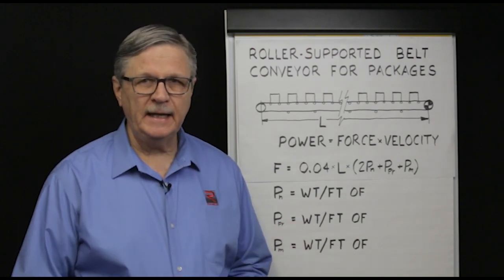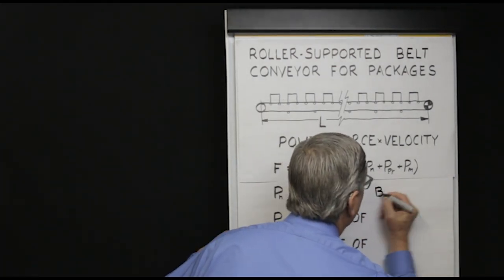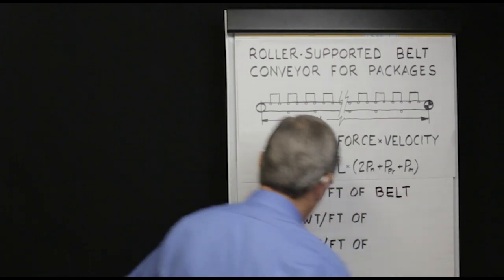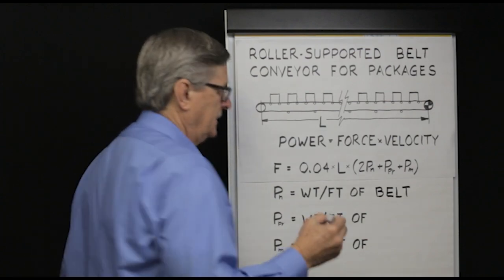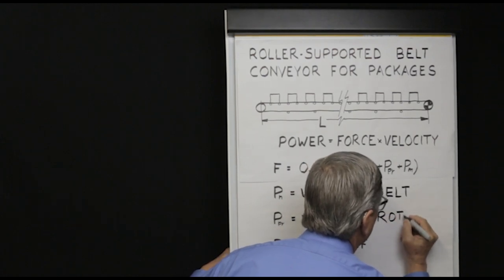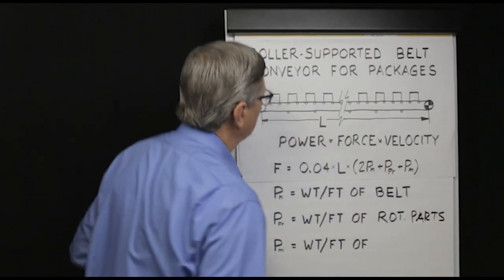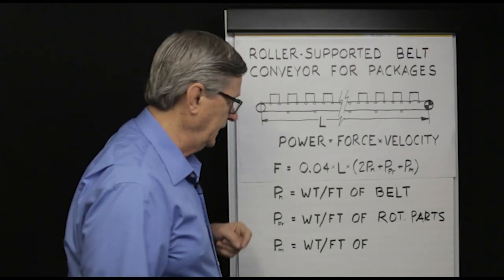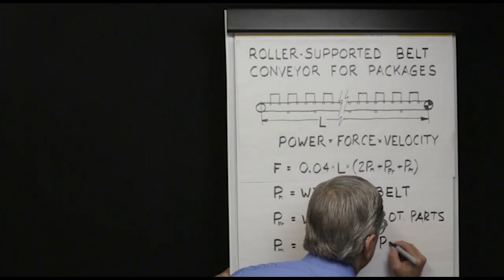PN is defined as the weight per foot of the conveyor belt. PPR is defined as the weight per foot of the rolling stock or rotating parts, which includes the rollers beneath the carrying strand and the rollers beneath the return strand. And finally PM is the weight per foot of the product to be handled.